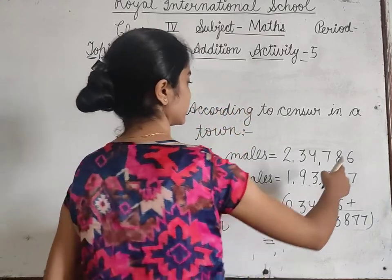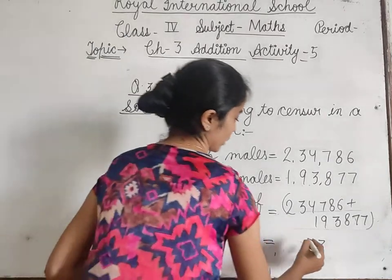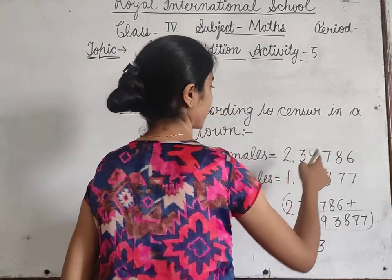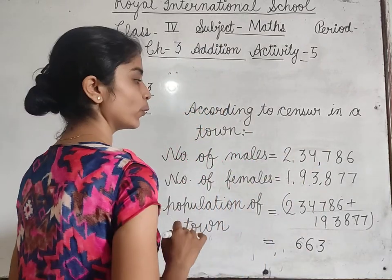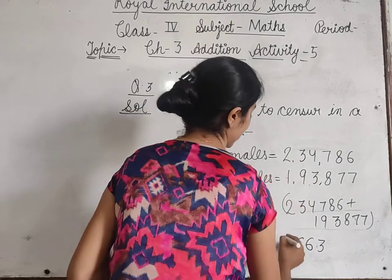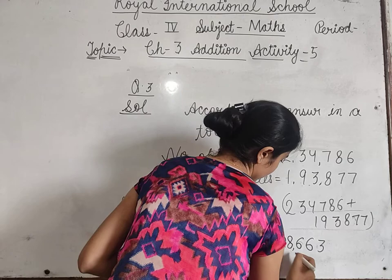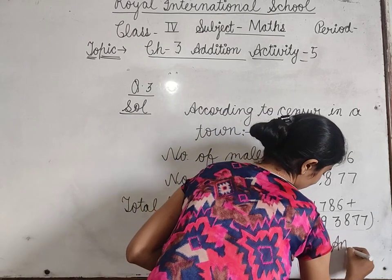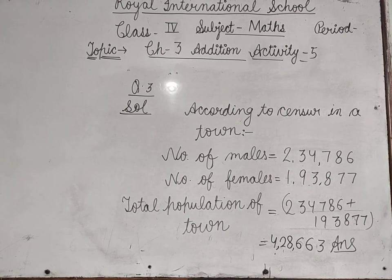Add करेंगे: 7 plus 6 equals 13, 1 carry forwarded; 8 plus 8 equals 16, 1 carry forwarded; 8 plus 8 equals 16, 1 carry forwarded; 4 plus 4 equals 8; 3 plus 9 equals 12, 1 carry forwarded. Total population equals 4,28,663. That's it.